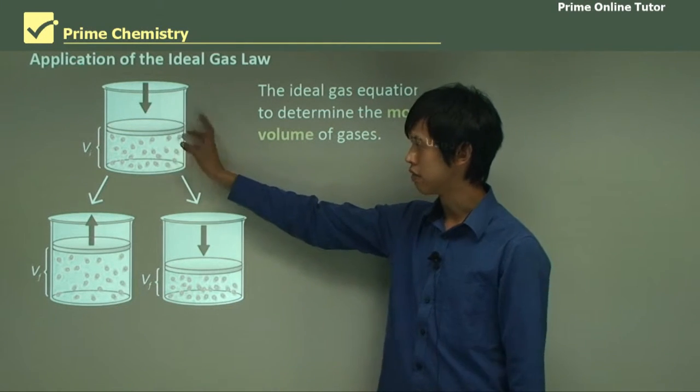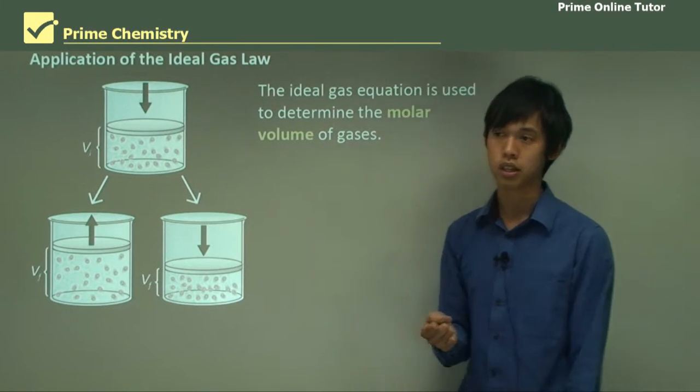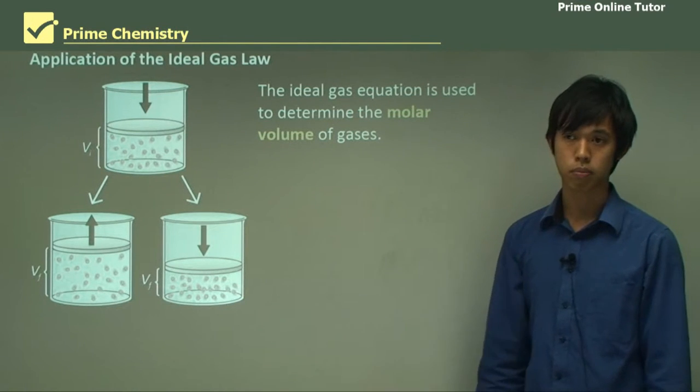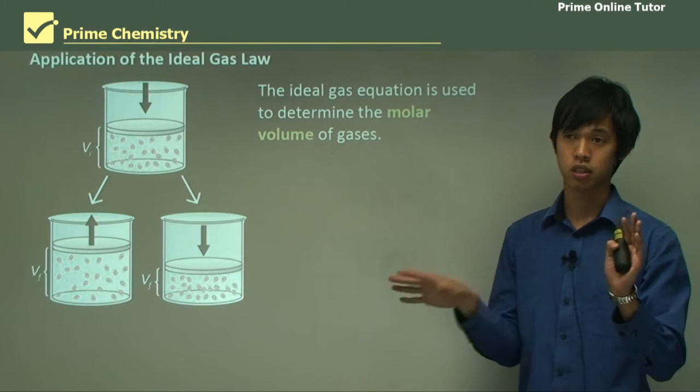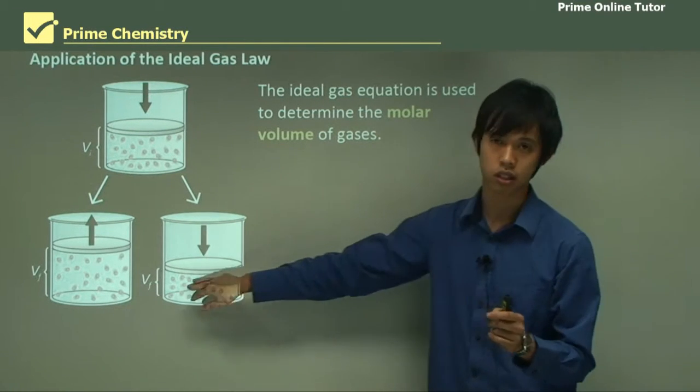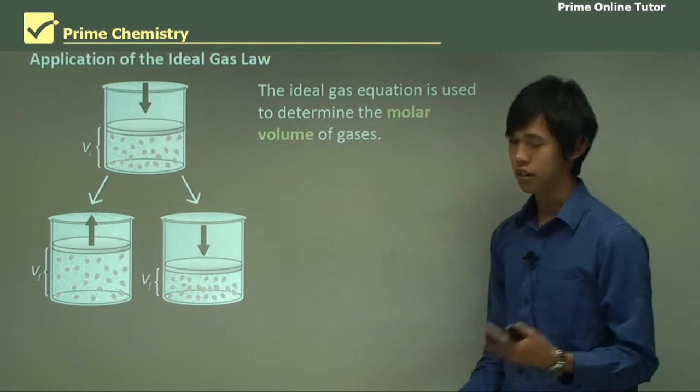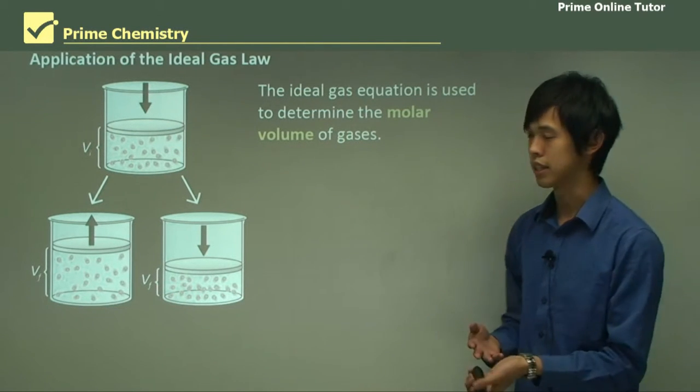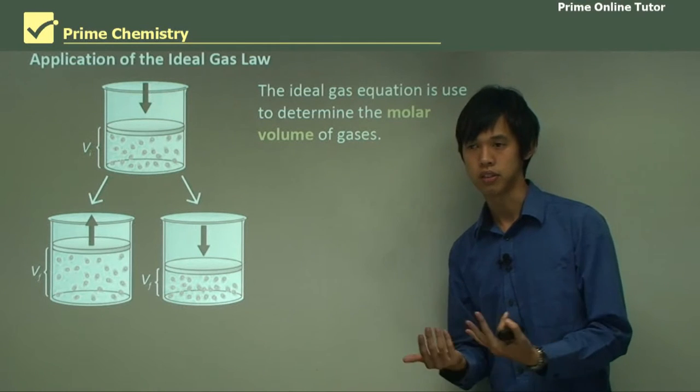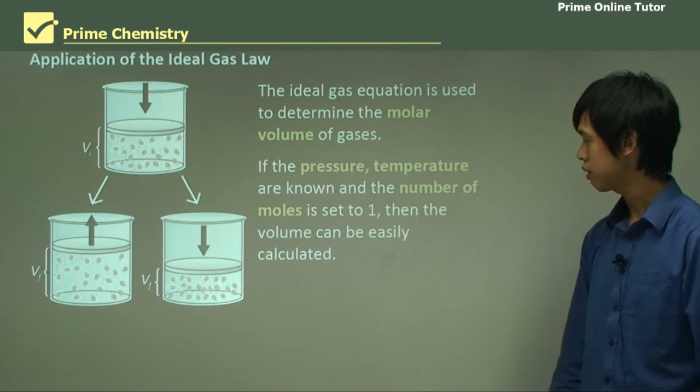So, as you can see here, if the pressure increases, the volume decreases, right? Because assuming the temperature is kept the same. So, as P goes up, V has to go down if the temperature doesn't change. And, of course, the number of moles doesn't change either. And, obviously, the opposite happens. If V goes up, the pressure goes down. And that kind of makes sense.